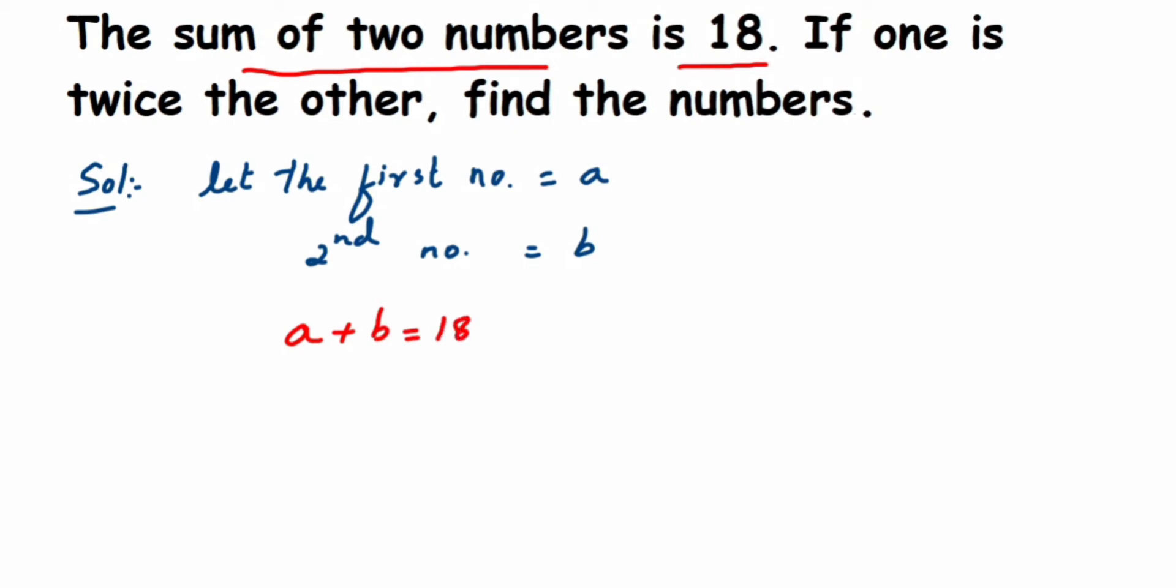That's one relation. And one more relation is if one is twice the other, means if one number is twice of other number, that is if a is twice the second number that is b. So a is equal to 2b like that.